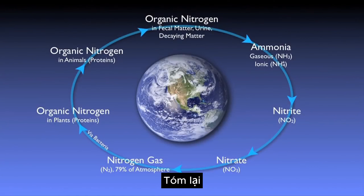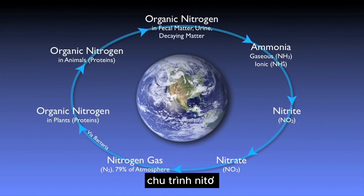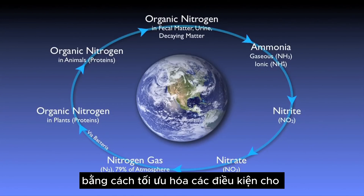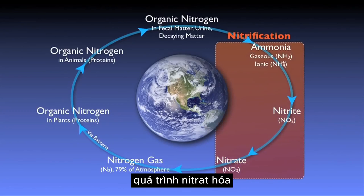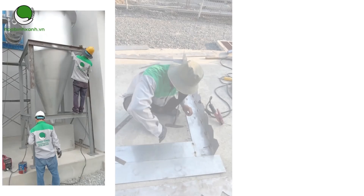So in summary, a wastewater treatment plant helps nitrogen through the nitrogen cycle by optimizing conditions for nitrification and denitrification.